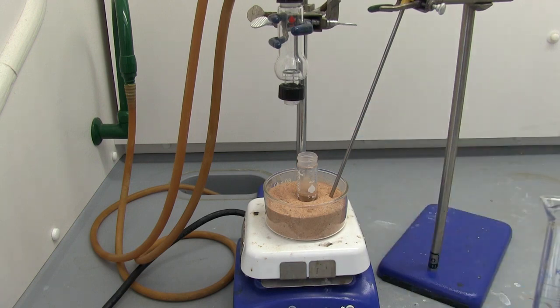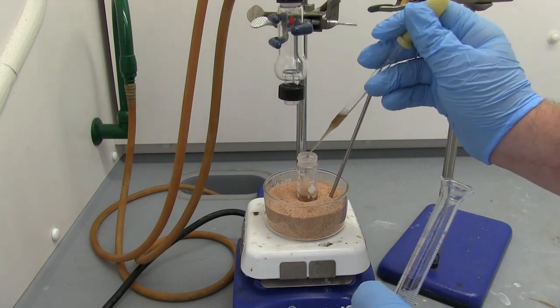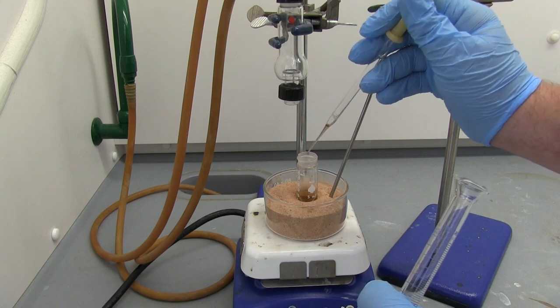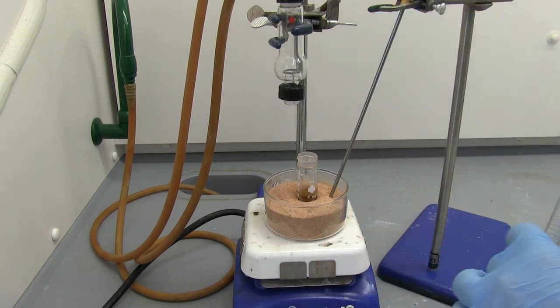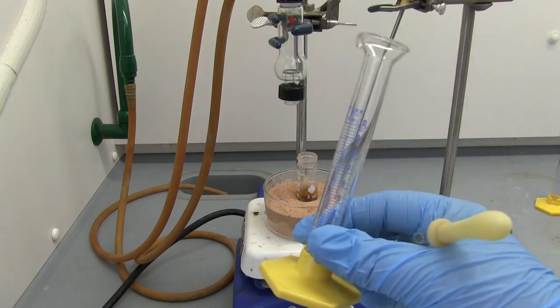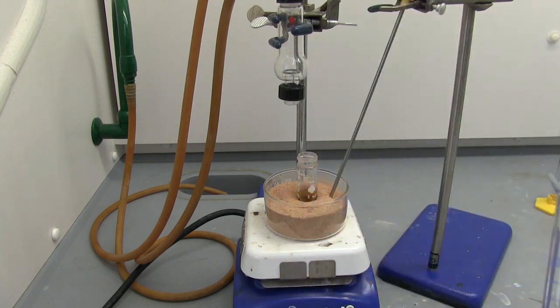Now we're going to slowly add our half mil of sulfuric acid. Next we're going to add our 2-methyl-2-butanol. So a mil of the 2-methyl-2-butanol, again we're going to add it in.